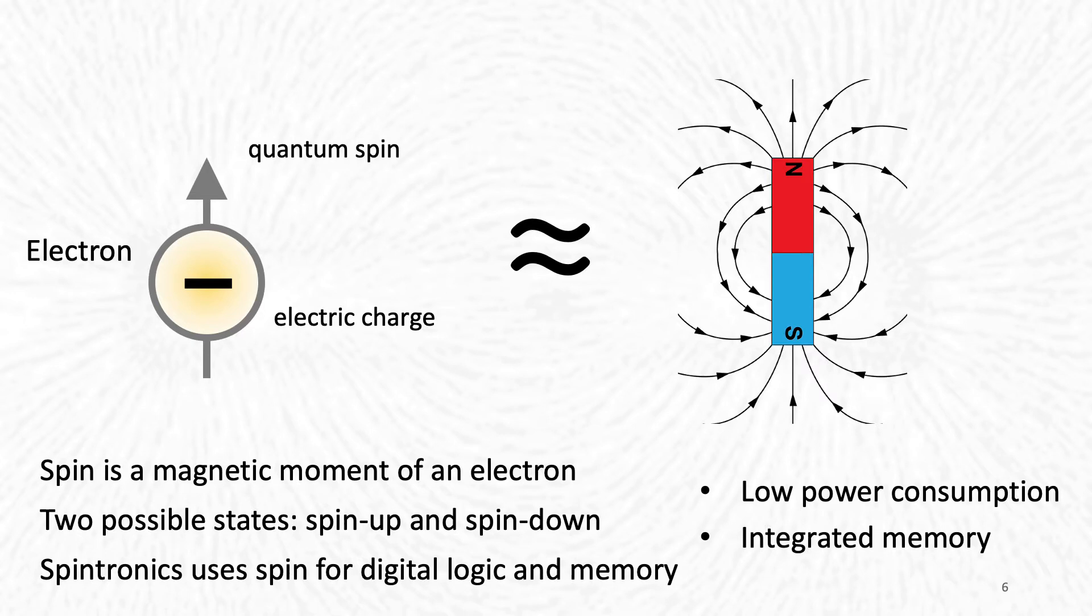This approach can offer two main advantages. First, is that changing the spin of an electron takes less energy than moving electric charges through a device, which means that spin-based devices can operate at lower power. If such technology could be used in mobile phones, they would need to be charged less often. The second is that the electron spin in magnetic materials can be used to realize computer memory that does not lose information when the power is cut off. So using electron spin for both logic and memory can lead to more integrated and more efficient devices.